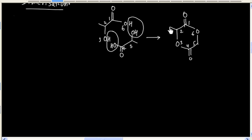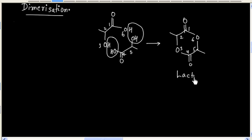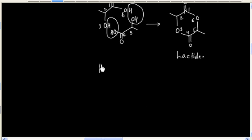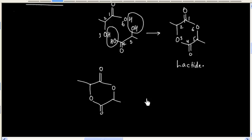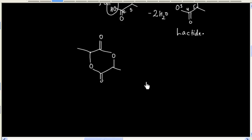Carbon number 2 has a methyl group and carbon number 5 has a methyl group. So this is the lactide. This lactide is formed by loss of two molecules of water, and that is how we have two molecules of acid.